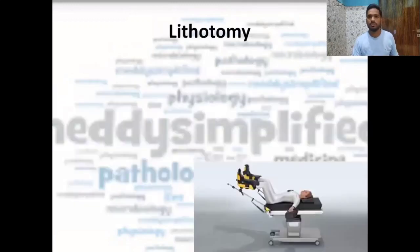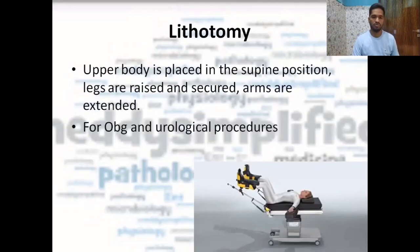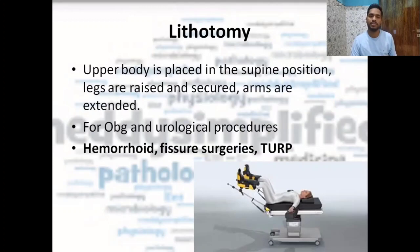Next we'll talk about lithotomy position. It is a common surgical position seen in gynecological and urological OTs. The patient lies in a supine position, but the legs are raised, secured, and the arms are extended. It is usually used for gynecological procedures, urological procedures, hemorrhoids, fissure surgery, and transurethral resection of the prostate. Previously these were done in jack-knife position, but now lithotomy position is used instead.